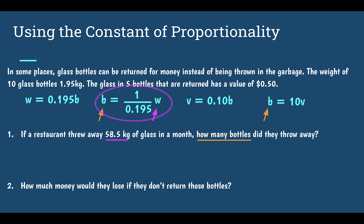So I'm going to use B equals 1 over 0.195 times W. Now that I know what equation to use, I can plug in my weight.